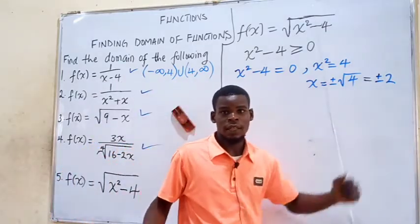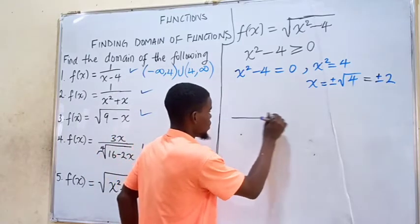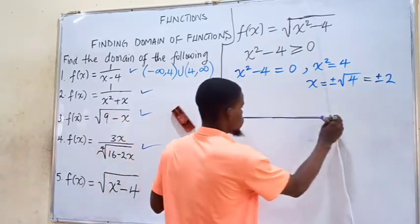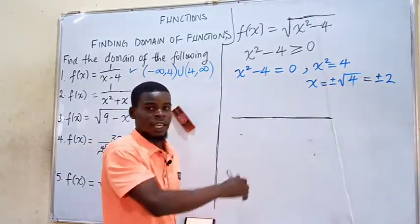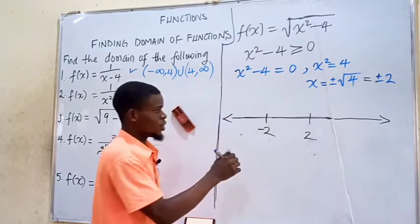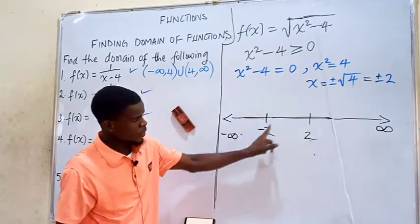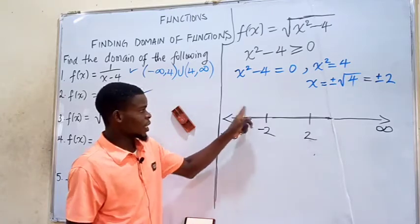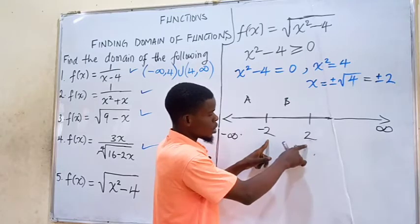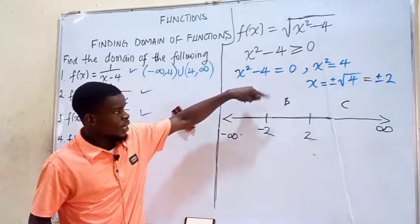These two values of x, positive 2 and negative 2, are what we call salient points — the points we will use on the number line. Negative 2 is on the left side and positive 2 is on the right. The number line extends to negative infinity on the left and positive infinity on the right. We name the three resulting intervals: A, from negative infinity to negative 2; B, from negative 2 to positive 2; and C, from 2 to infinity. We will test each interval in the inequality.